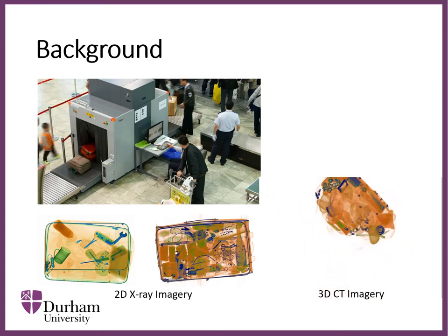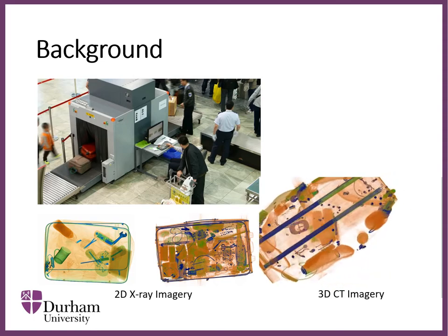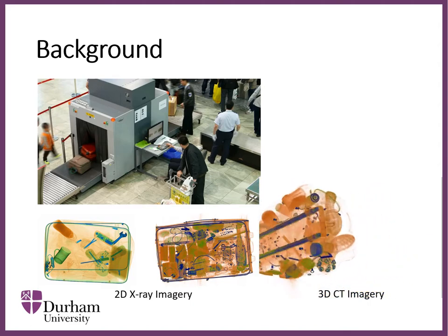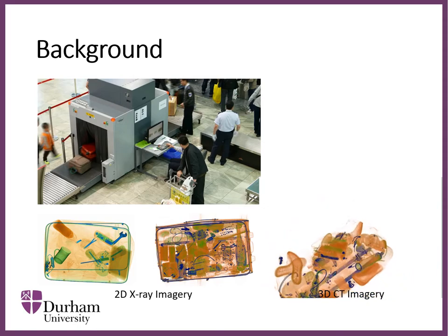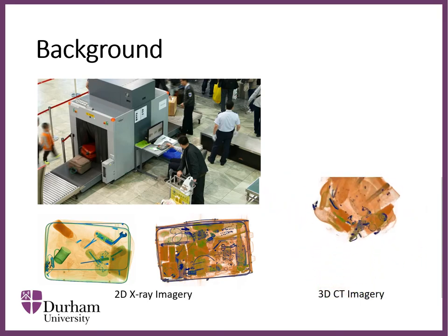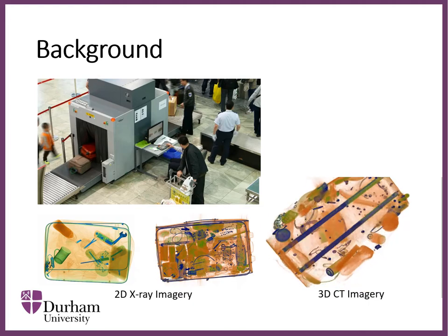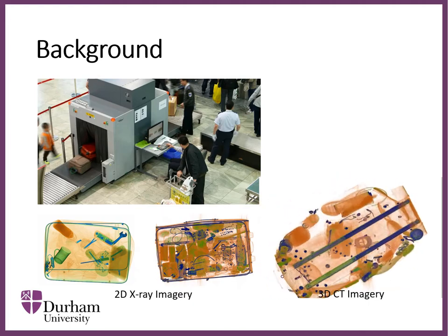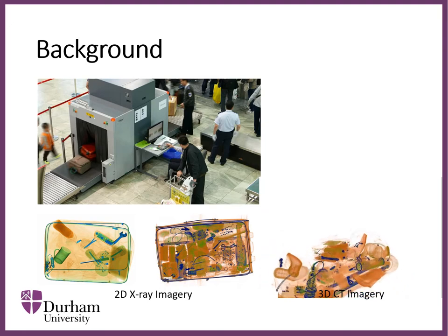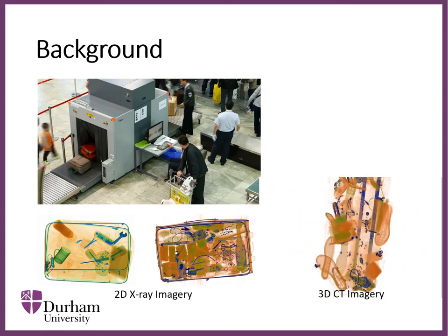Currently, 2D X-ray machines are deployed in most airports in the world. In our previous work we developed automatic algorithms for prohibited item detection in 2D X-ray images and achieved high performance. However, one limitation of 2D X-ray images is that prohibited items can be occluded by other objects in a cluttered image. One option to alleviate this problem is to use 3D CT images, which can provide more information to human operators to avoid possible missing detections.